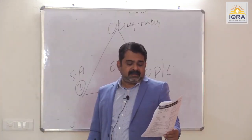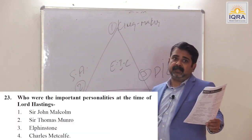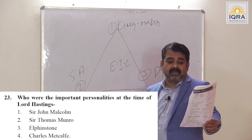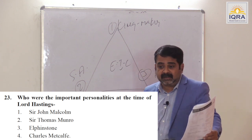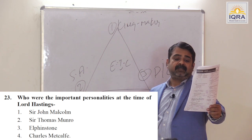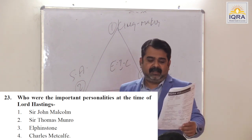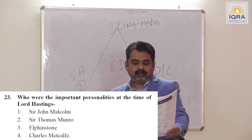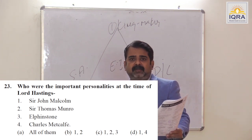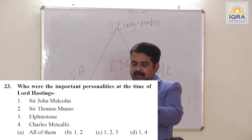Important personalities at the time of Lord Hastings: Sir John Malcolm — Administrator. Sir Thomas Munro — Governor of Madras 1820, responsible for introducing the Ryotwari system. Elphinstone — Governor of Madras 1819, who introduced Ryotwari and Mahalwari in South. Charles Metcalfe — negotiator between Rajputana and the company. All of them. Answer is A.